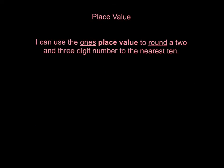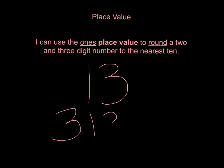Here's our I can statement for this video: I can use the ones place value to round a two and three digit number to the nearest 10. So we're going to be looking at two digit numbers, like 13, like we just talked about, and we're going to extend that and talk about three digit numbers, like 313.